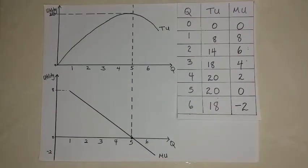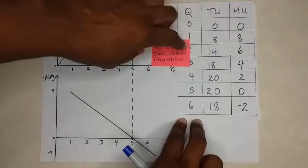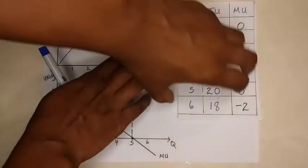And so we would keep consuming until we would consume where marginal utility is equal to price. And this is what we would call our equilibrium equation for the consumer. So if you were asked what is the consumer equilibrium using marginal utility, it would be where MU is equal to price.